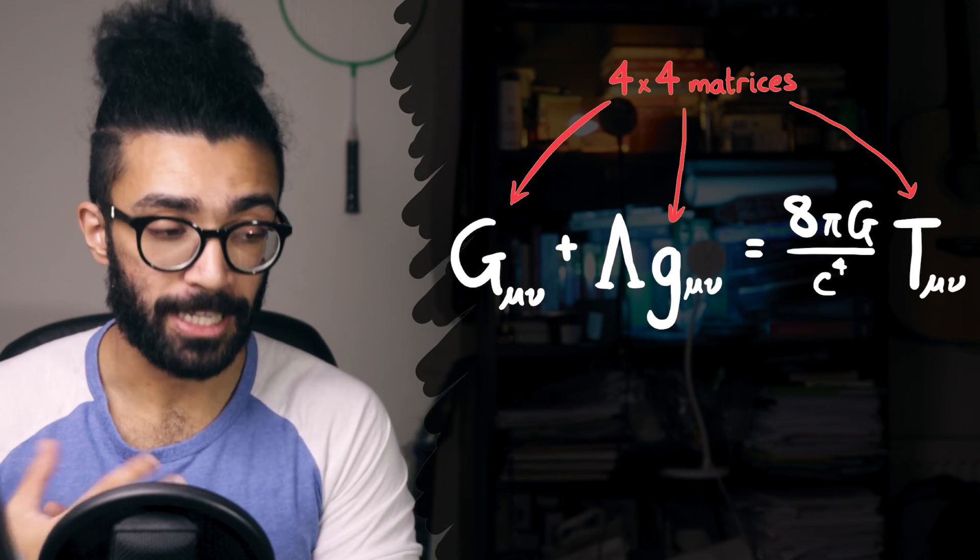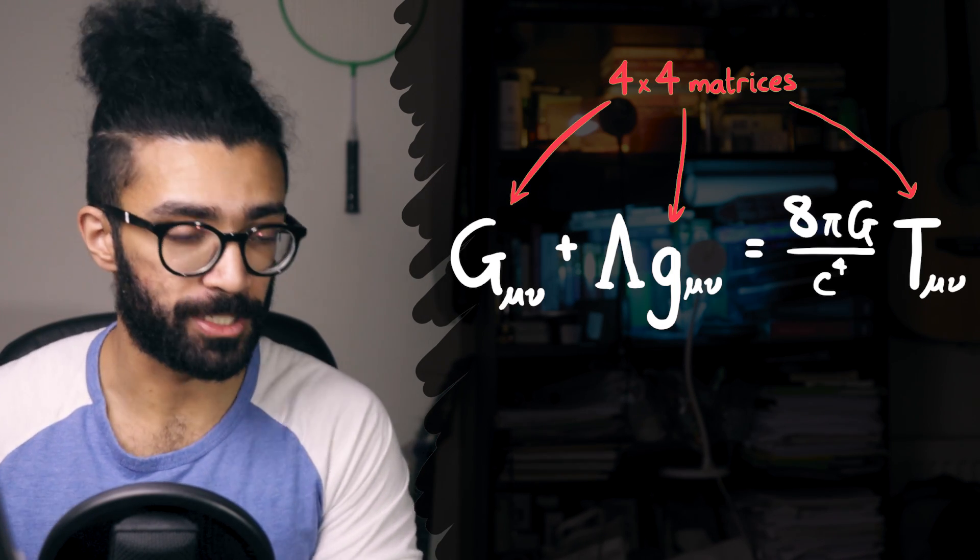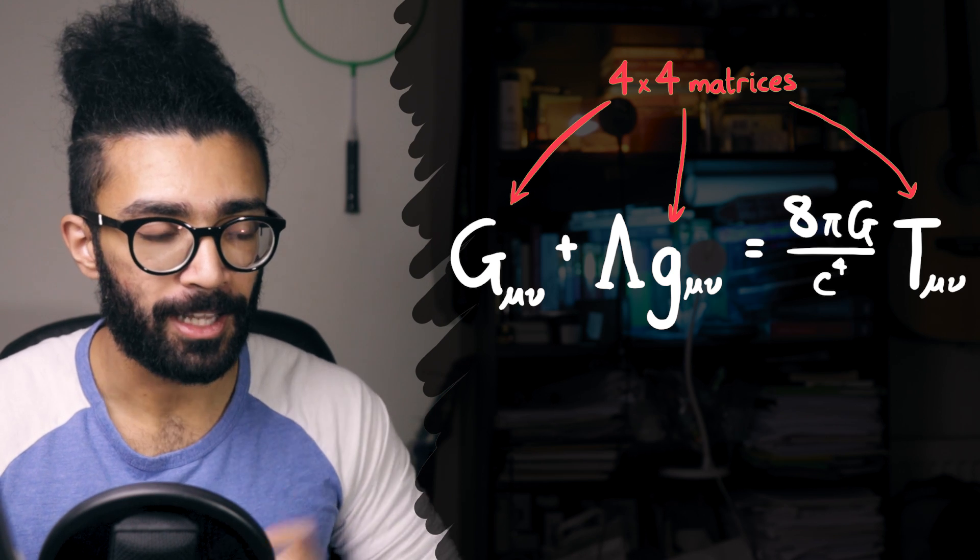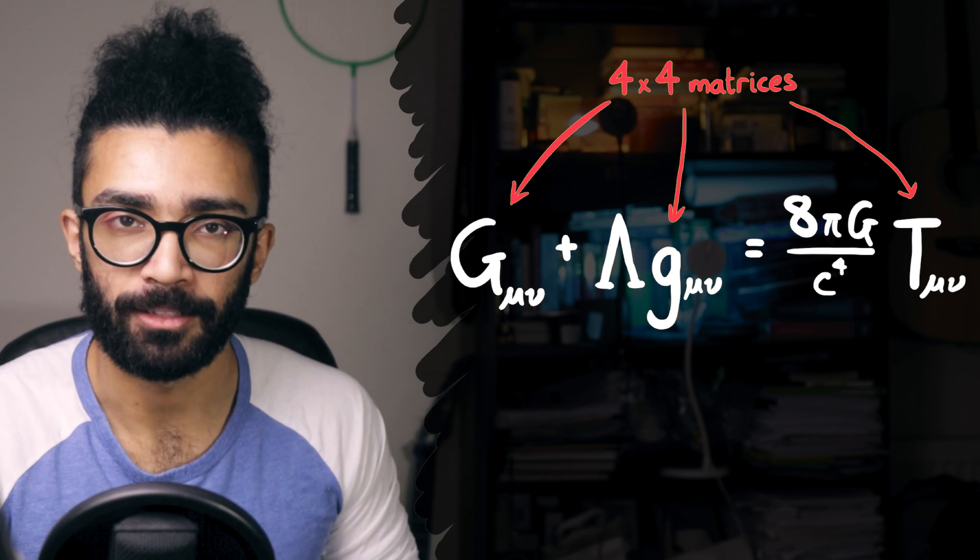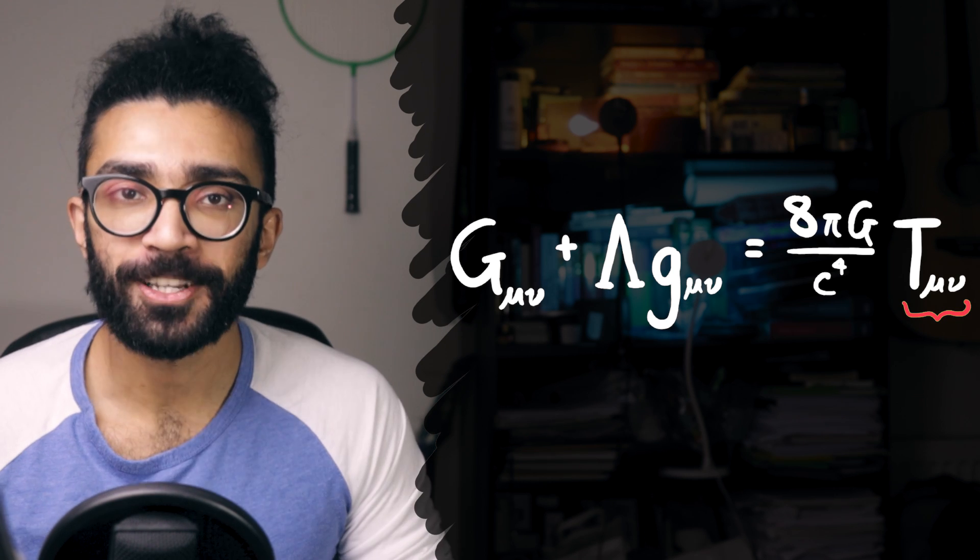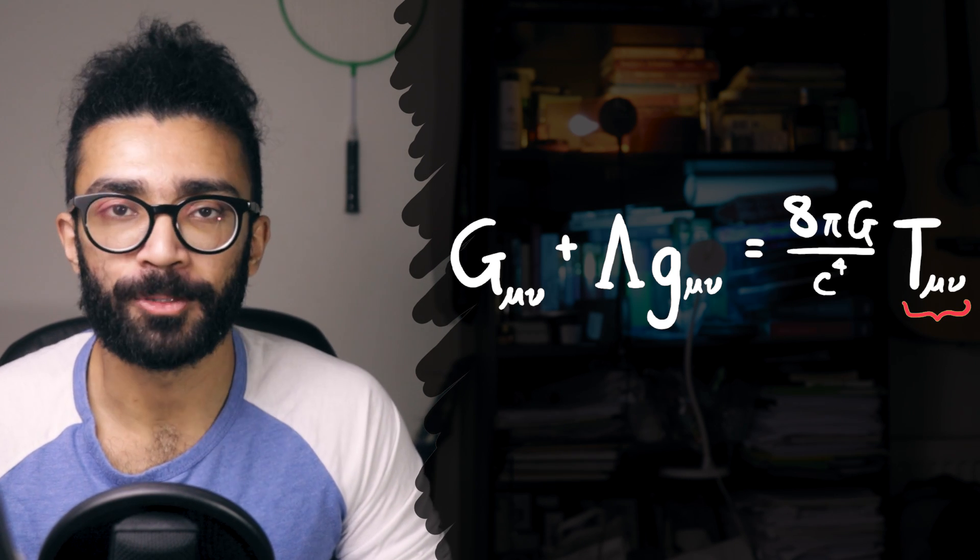So now that we know that we're dealing with tensors represented by matrices, specifically 4x4 matrices, let's work out what each one of these tensors is actually representing. What does it mean?